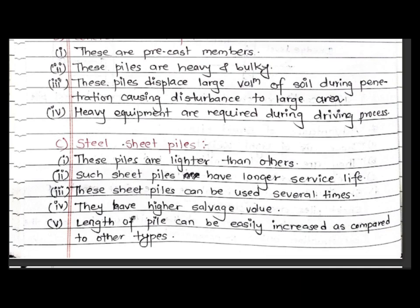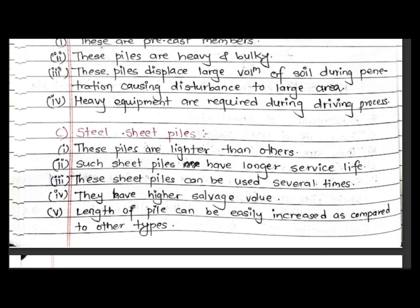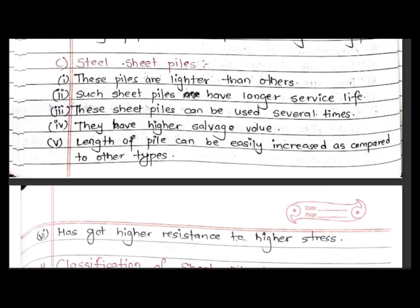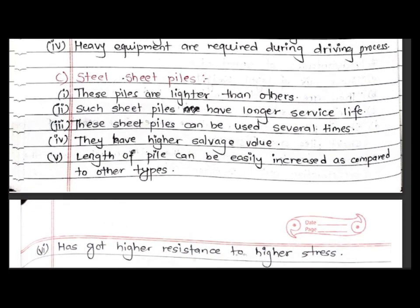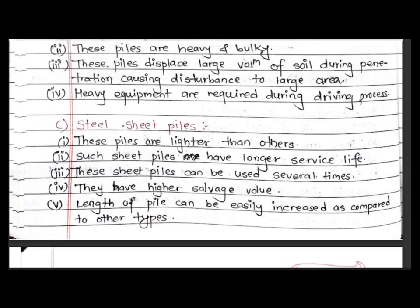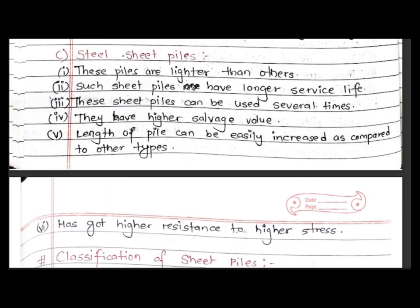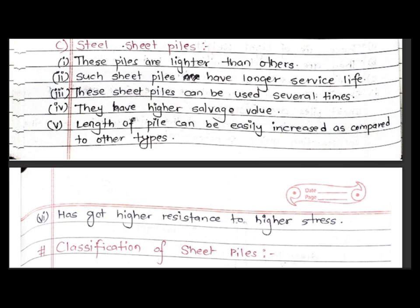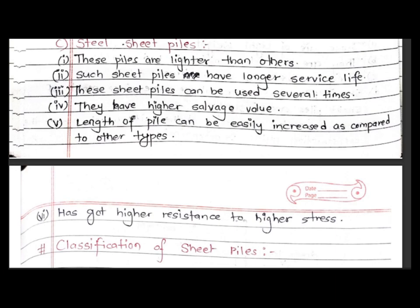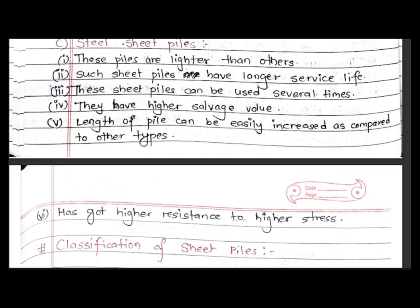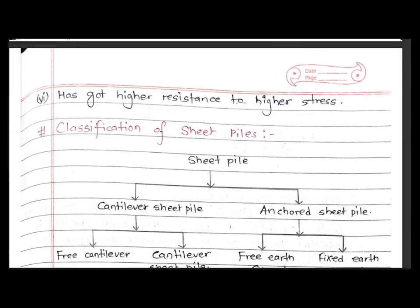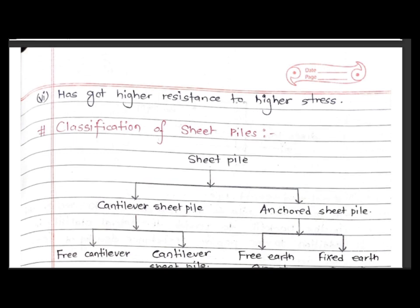Third is steel sheet pile. These sheet piles are lighter than others, have longer service life, can be used several times, and the length can be easily increased as compared to other types. Steel sheet piles have higher resistance to higher stress.